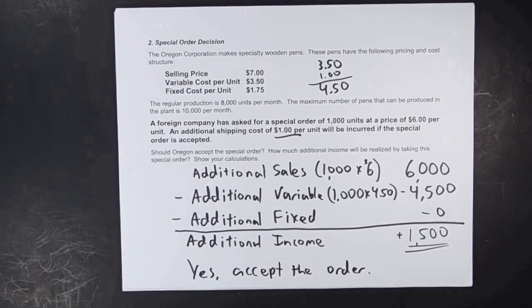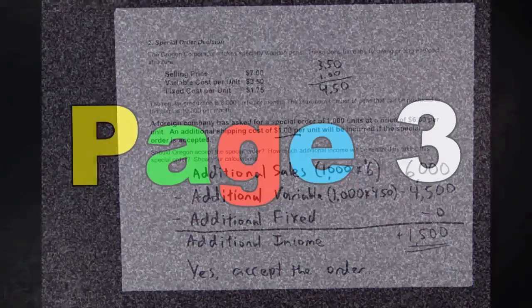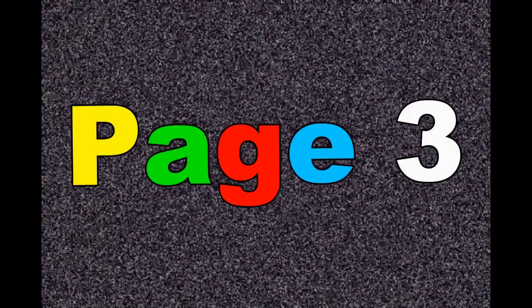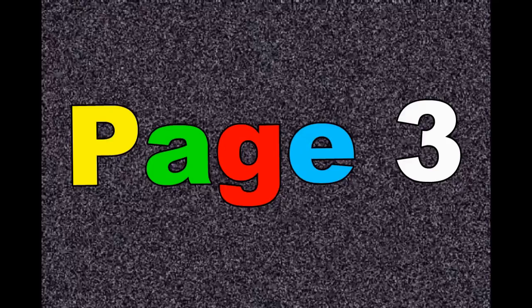Because it's going to add a positive $1,500 to our income, we would say yes, we would want to accept the order. We'd be $1,500 better off taking it. For those of you who had micro-econ, this is similar — as long as you cover your variable cost, you'll produce.